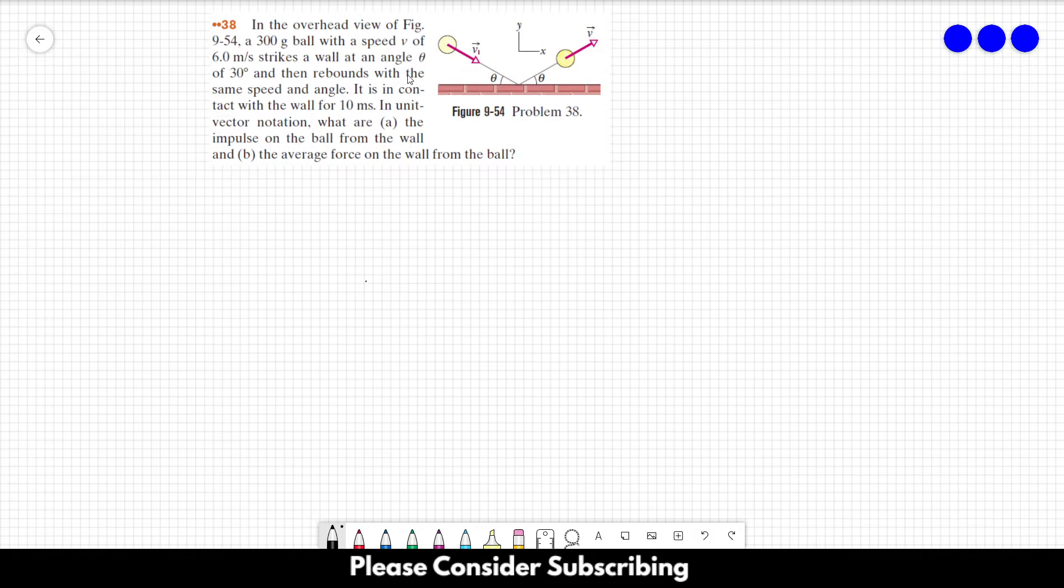Number 38. In the overhead view of this figure, a 300 gram ball with a speed of 6 meters per second strikes a wall at an angle of 30 degrees and then rebounds with the same speed and angle. It is in contact with the wall for 10 milliseconds. In unit vector notation, what are: letter A, the impulse on the ball from the wall, and letter B, the average force on the wall from the ball?